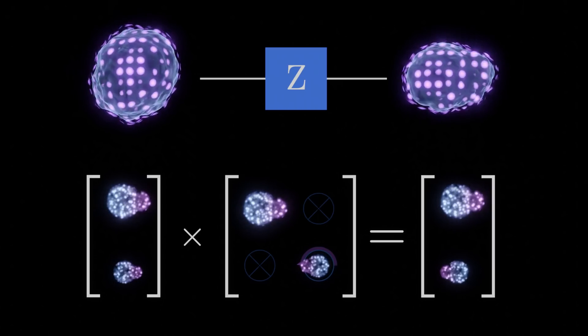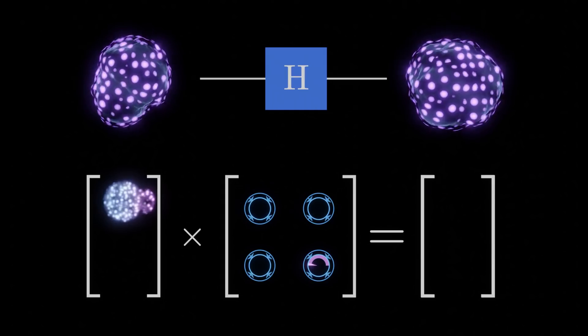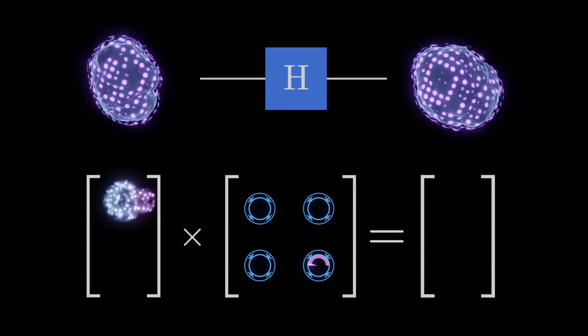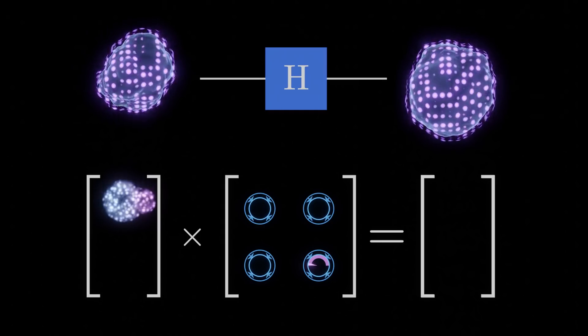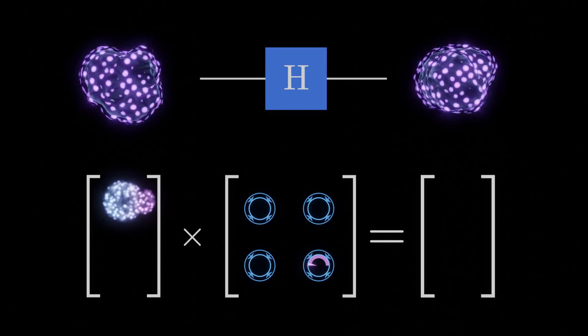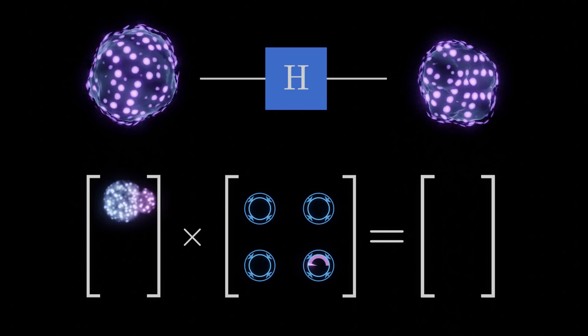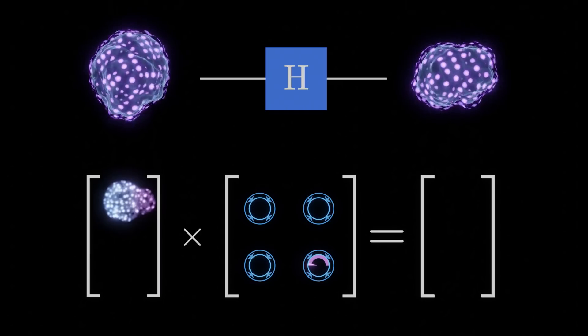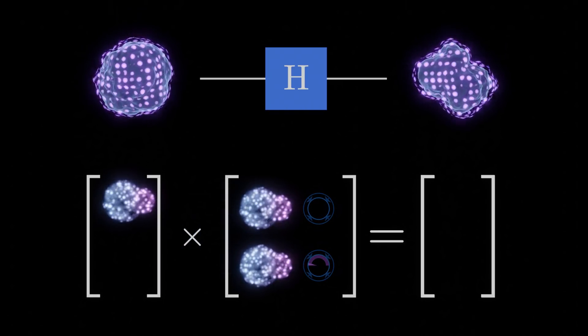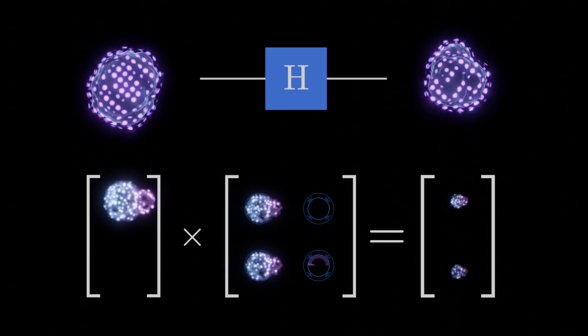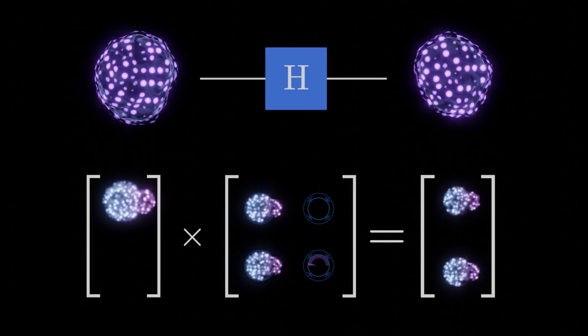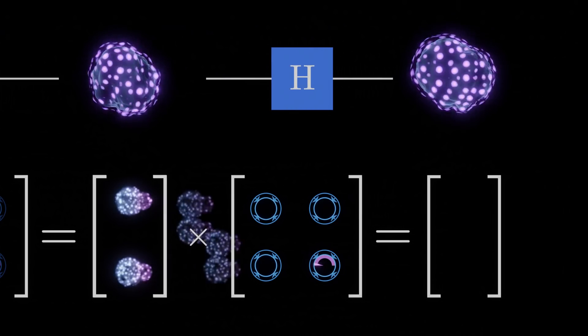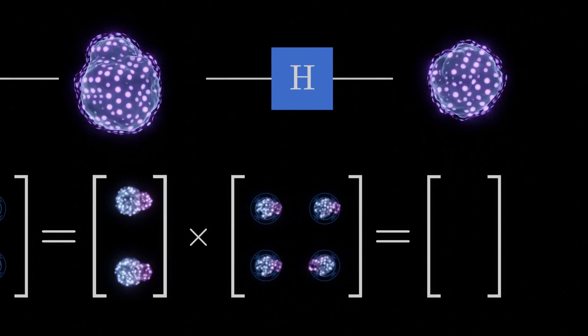One surprisingly useful gate is the Hadamard gate, represented with the letter H. Similar to the Z gate, one of the elements in the matrix has a phase of pi radians. The uses of this gate are not immediately clear from its matrix representation, so I'll provide a few examples. If we take a qubit that is likely to be observed in the 0 state, applying the Hadamard gate will cause it to be equally likely to be observed in either state. A little stranger, if we then take this qubit and apply the Hadamard gate a second time, it will return to likely being observed in the 0 state.